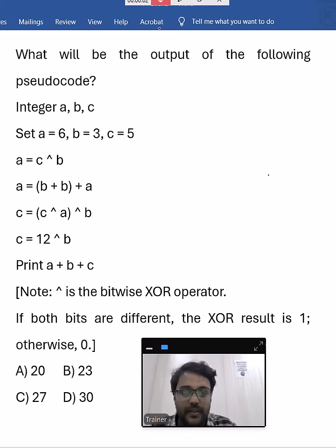Here let us see about this question, a pseudocode question given in Accenture. Here A value is given as 6, B is 3, C is 5, all are integers.